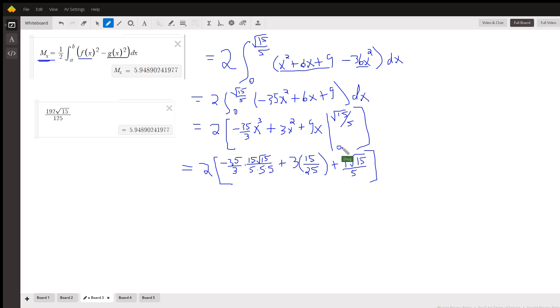Evaluate from 0 to radical 15 over 5. I've shown the work. After canceling, getting a common denominator, and combining similar terms, there is M sub x: 192 radical 15 over 125.